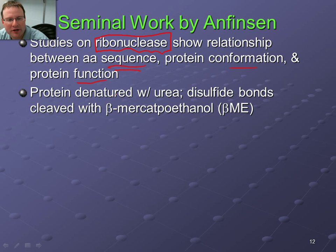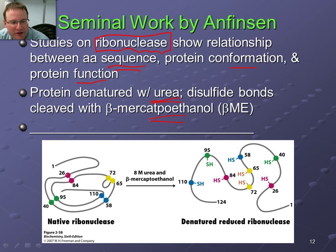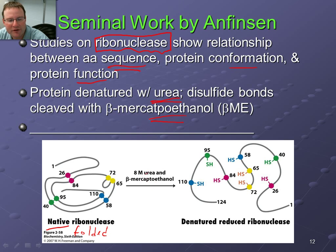What Anfinsen did was perform a chemical denaturation experiment: he treated ribonuclease with urea at very high concentration to unfold it, then added beta-mercaptoethanol to reduce the disulfide bonds. A cartoon shows the experiment — on the left, ribonuclease in its native folded form; after adding the denaturing molecules, the completely unstructured form of the protein is shown. He observed this using circular dichroism spectroscopy, watching the amount of secondary structure decrease as chemical denaturant was added.